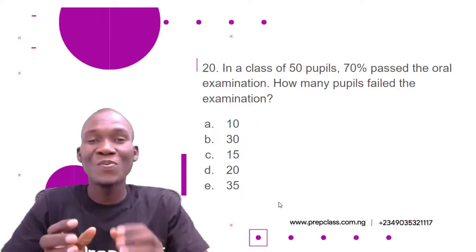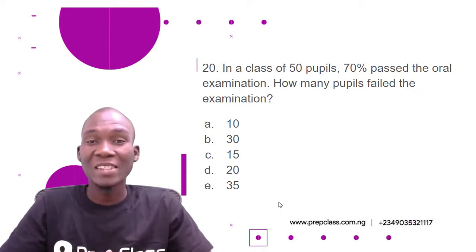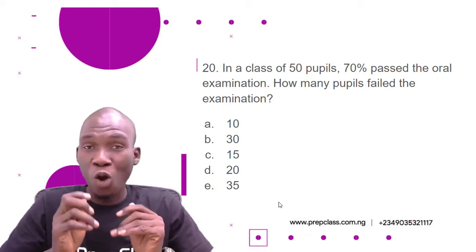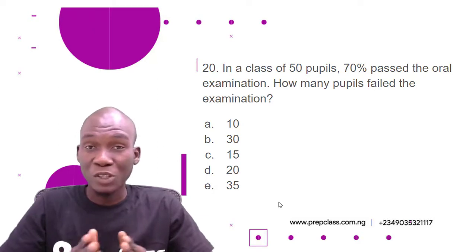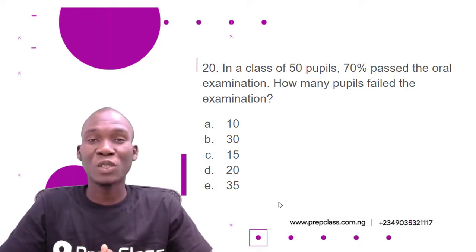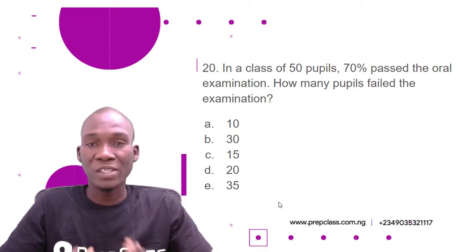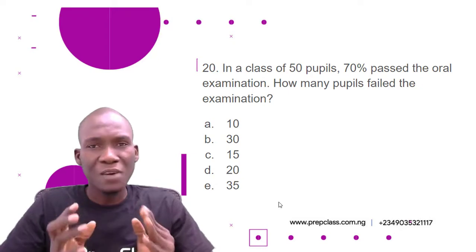The next question is the last one for this video. I hope you're following and understand how we solve these questions. Remember to put your questions in the comment section and I will provide answers. Question number 20: In a class of 50 pupils, 70% passed the oral examination. How many pupils failed the examination? Options: A) 10, B) 30, C) 15, D) 20, E) 35.